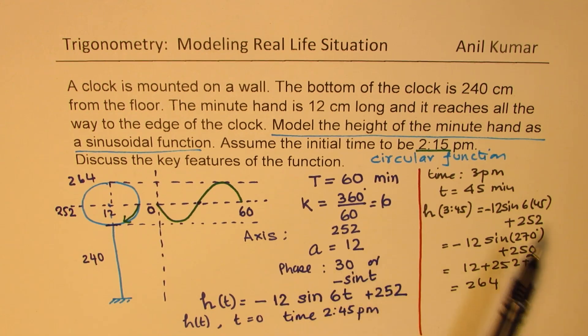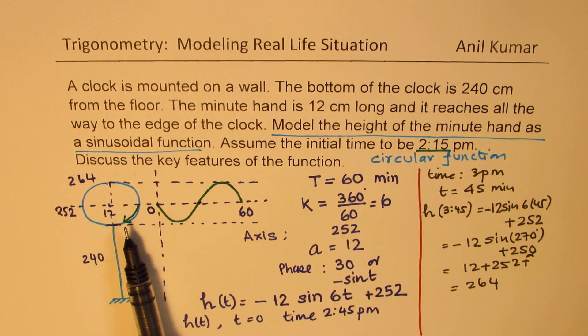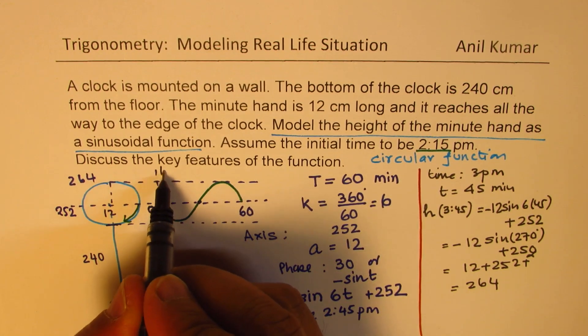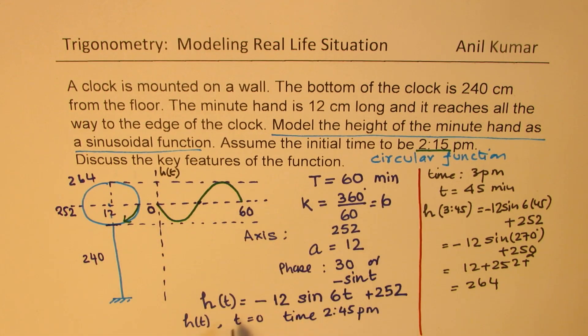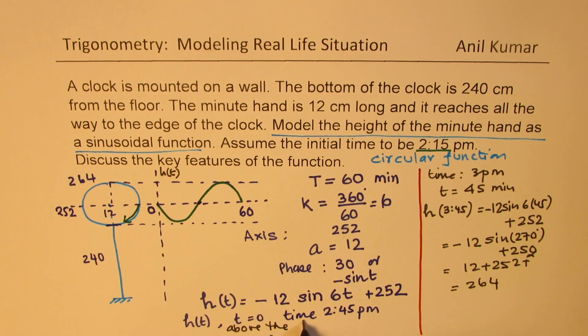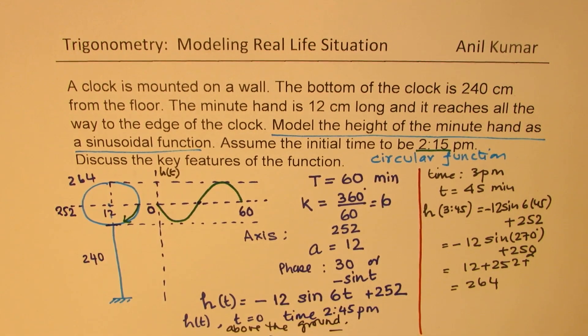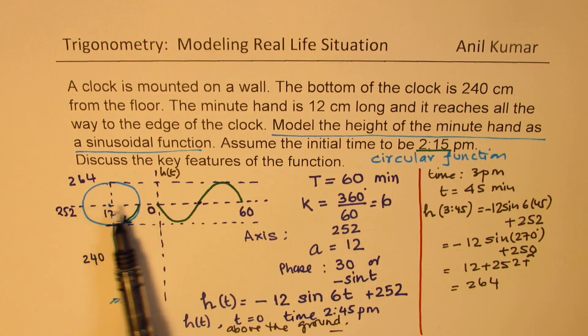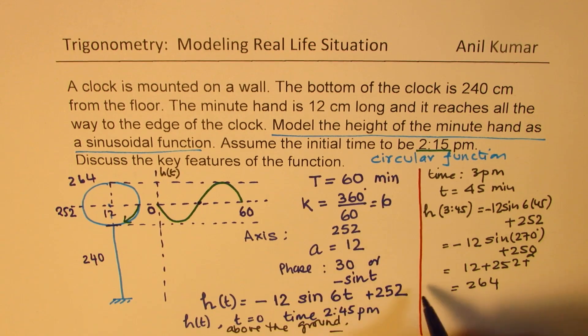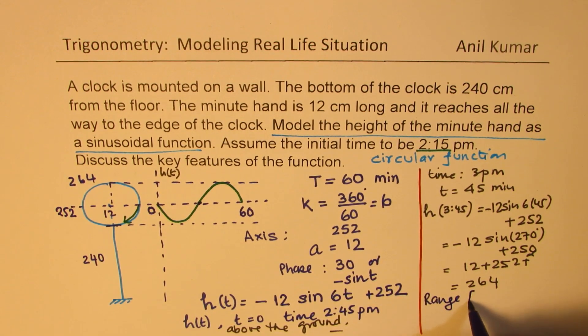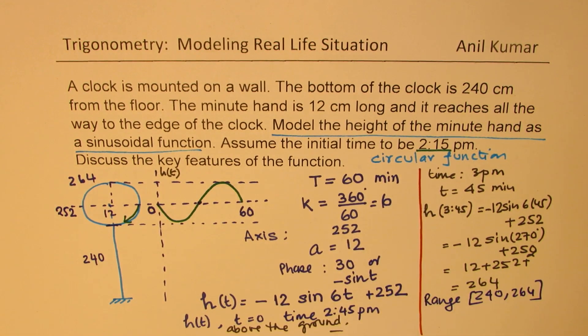I hope you have understood the whole concept, how to go about getting the model from a given real-life situation. This height represents the height of the needle above the ground. The axis represents the mean value here, which is the mean of the range. So, the range is 240 to 264. All of the parameters are already given to you in the form of developing this model.